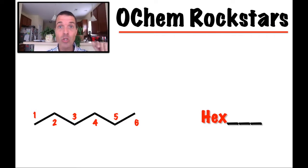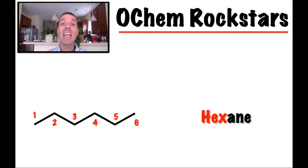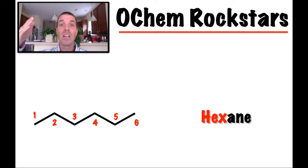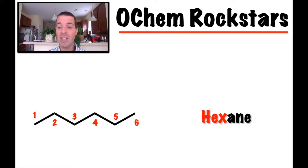In this case we've got six, which is 'hex'. So we write 'hex' first. Remember there's a prefix and a suffix — do you remember the suffix? '-ane' means alkane. So this is going to be hexane. Hex is six, '-ane' means all single bonds. So that structure is called hexane.